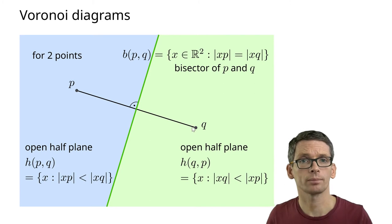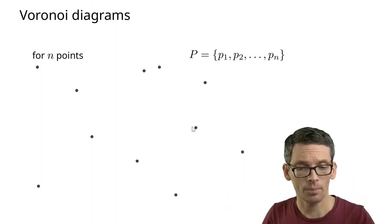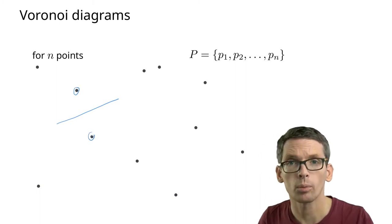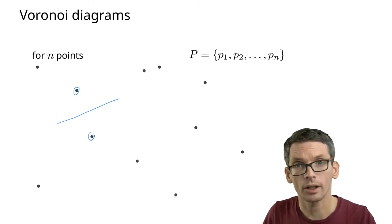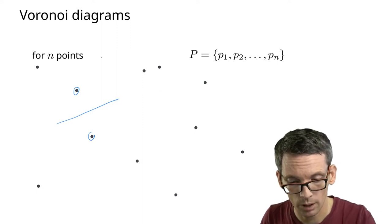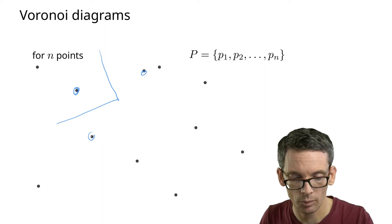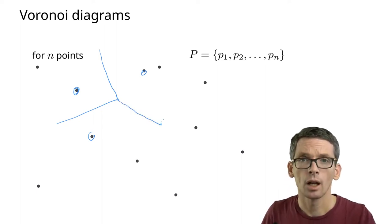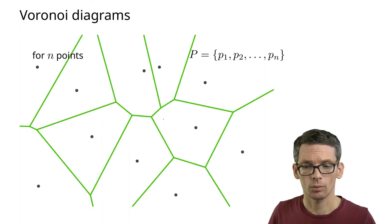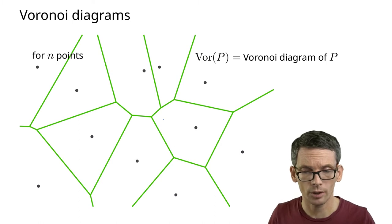How does this generalize to more points? For any pair of points I could look at such a bisector. Locally the Voronoi diagram might look like that, but this doesn't continue forever — at some point it will hit the bisector between two other points, and then continue on that bisector. So the Voronoi diagram is composed of parts of bisectors. It will look something like this — this is called the Voronoi diagram.